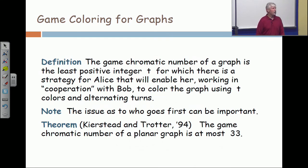Okay, let's talk about some variance and we'll play some games here. The game chromatic number of a graph is the least integer for which there is a strategy for one of the players, let's say Alice, that will enable her working in cooperation with Bob. They're going to alternate turns to color the graph using t-colors, and let's do this on the document camera for a couple of graphs.